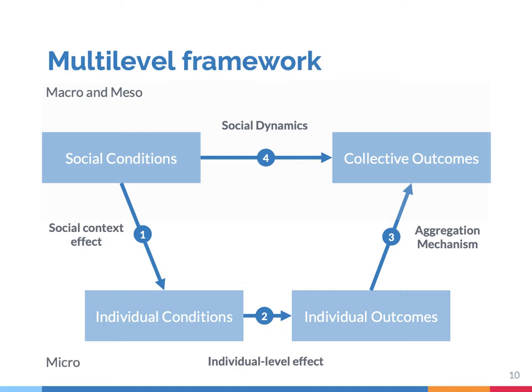Social context effects relate the social context to the individual level — so how does the social environment affect our beliefs, our attitudes, behavior, and so on? Individual level effects are about micro-level processes. For example, how do people's values and attitudes shape their behavior? The theories formulated at this level are called micro-models, or also theories of action, or simply micro-level propositions.